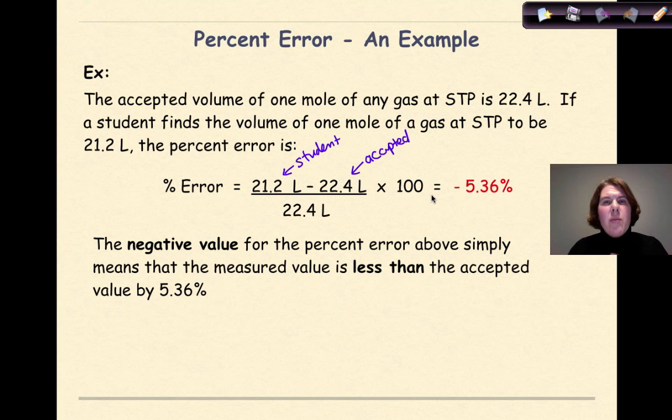Now don't freak out about the negative. The negative value for the percent error above simply means that the measured value is less than the accepted value by 5.36 percent. So if you get a negative percent error, it's not a bad thing. It means that your value was just a little bit below the accepted value.